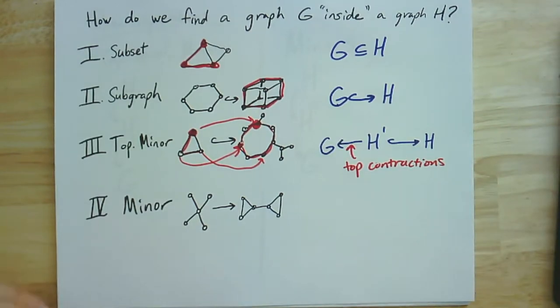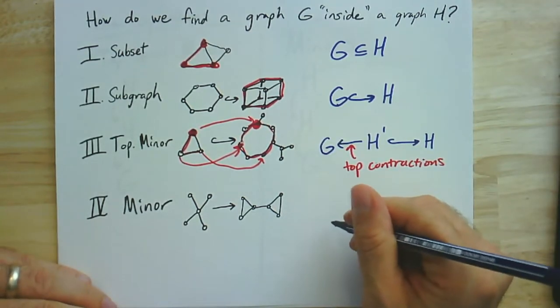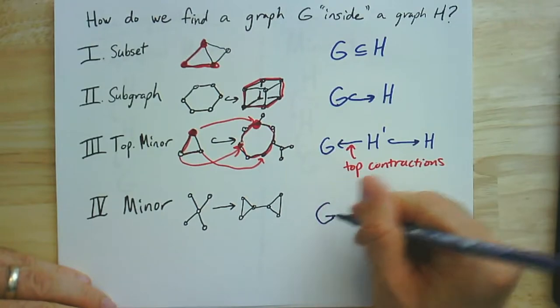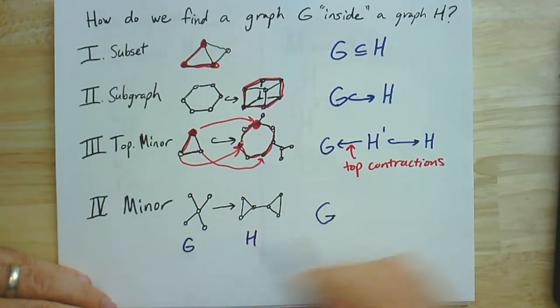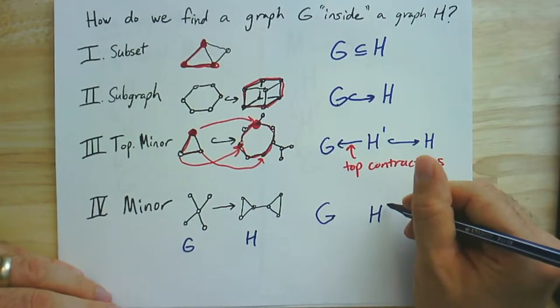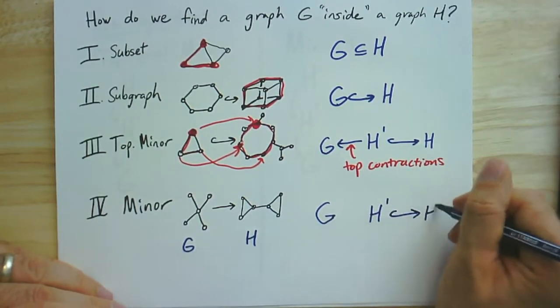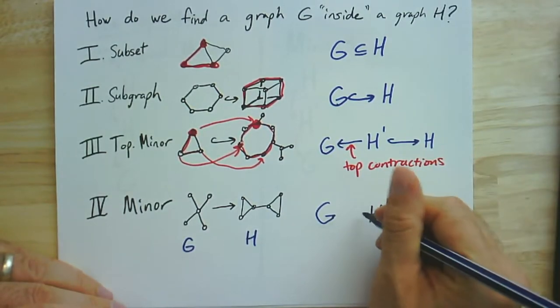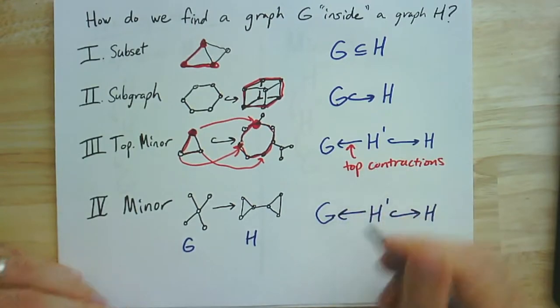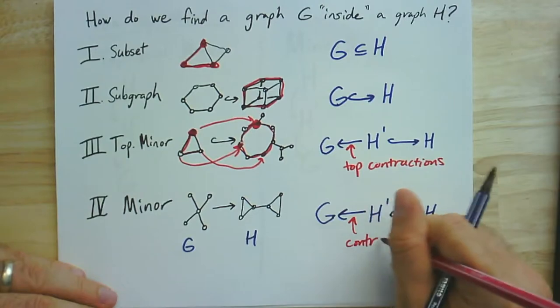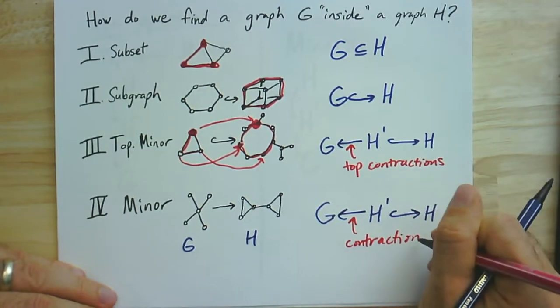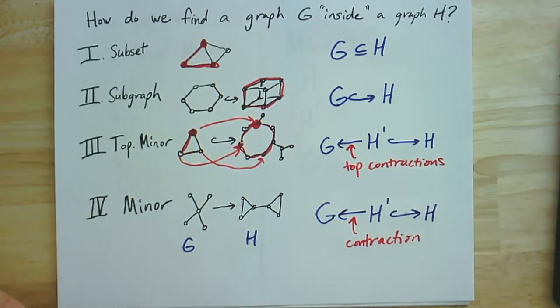And now, that gets us to our notion of minors, which is very similar. Again, if this is G and this is H, I am going to look for a subgraph of H. Let's call it H prime. So there's some subgraph such that I can contract that subgraph to G. In this case, that subgraph H prime might be just this part right here.